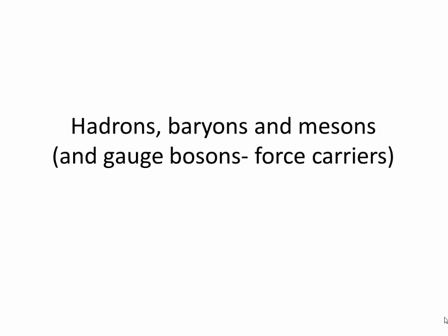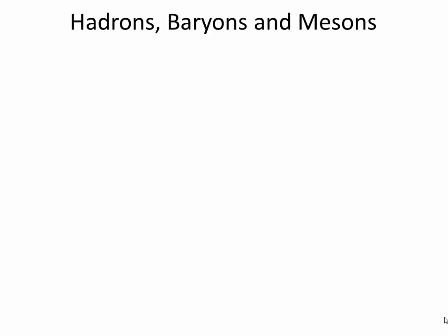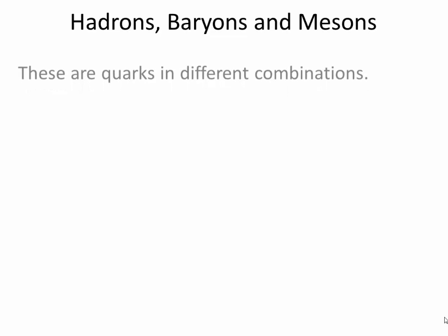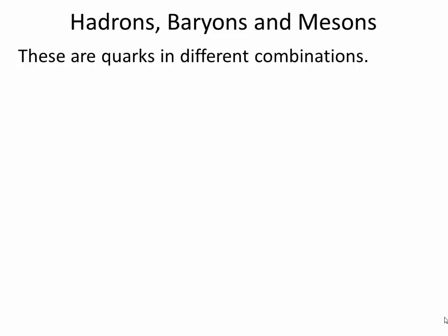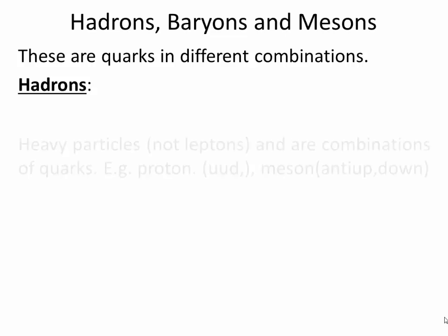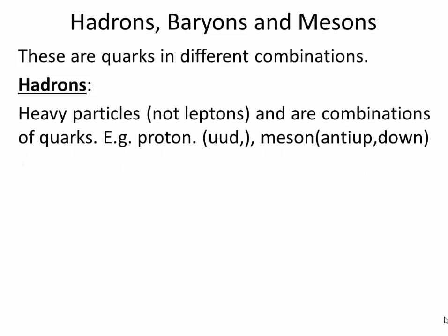Now we're going to look at hadrons, baryons, mesons, and gauge bosons. Hadrons are basically heavy particles, which means they're not leptons — that means light particle. These heavy particles are combinations of quarks. For example, a proton is an up, up, and down quark. A meson is an anti-up and a down quark, for example.